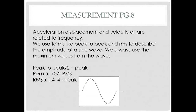Acceleration, displacement, and velocity are all related to frequency. We use terms like peak-to-peak and RMS to describe the amplitude of a sine wave — those of you who are electricians are very familiar with this. We always use the maximum values from the wave. Frequency is measured from one peak to the next. The peak value is our peak displacement, and peak-to-peak is from the top of one peak to the bottom of the other. To convert from peak to RMS, multiply by 0.707; to get peak from RMS, multiply by 1.414.